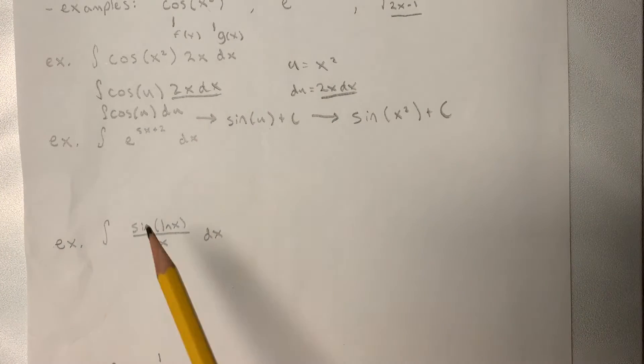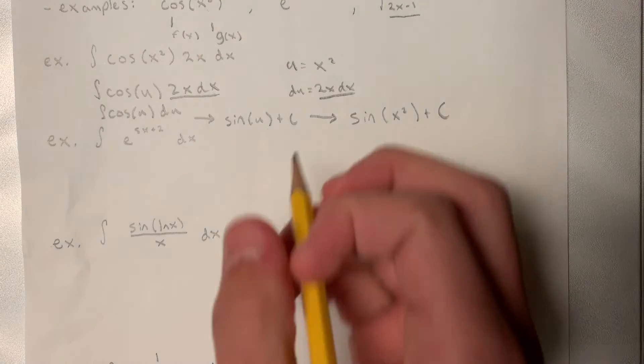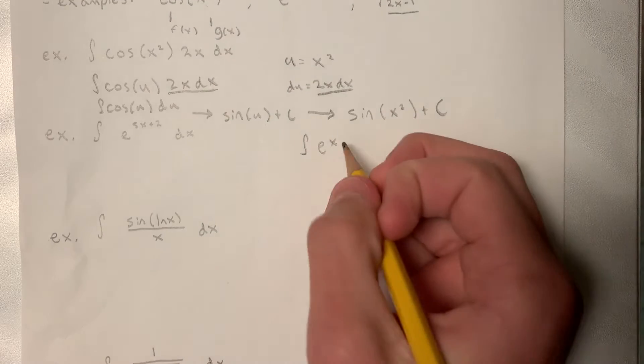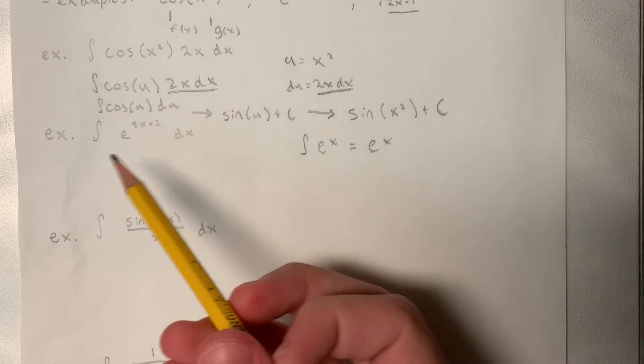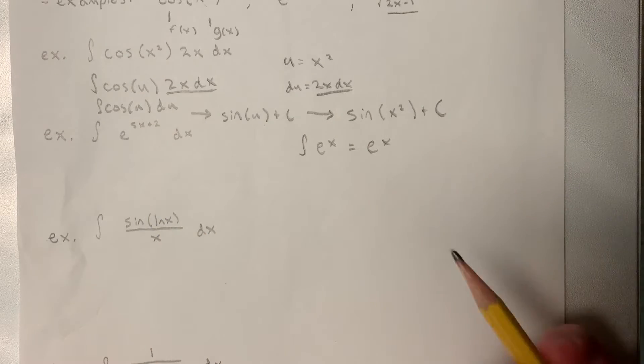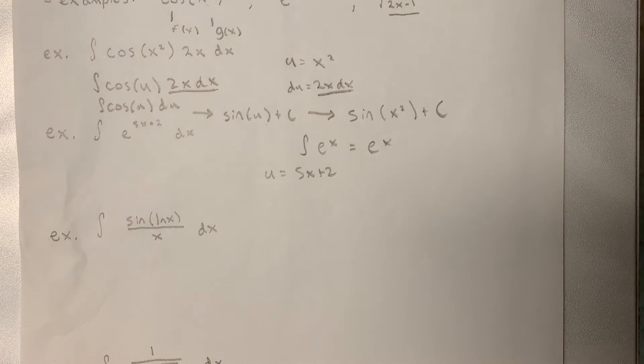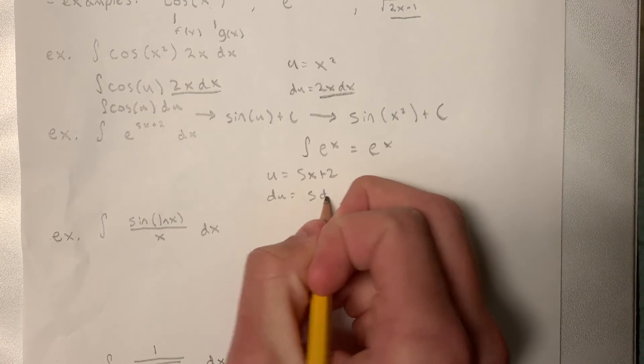Alright, for the next example we have e to the 5x plus 2 dx. So we know from the past that the integral of e to the x is just itself, e to the x. So let's try to make this integral into that form. So let's take our u to be 5x plus 2, which would make our du 5 dx.